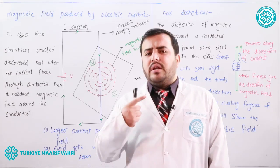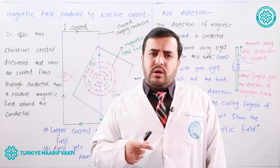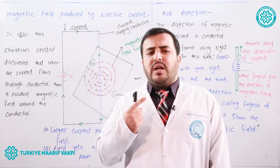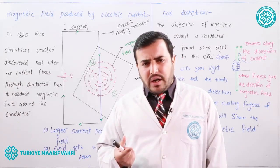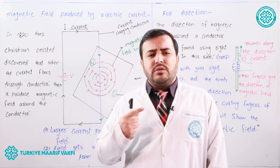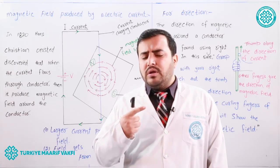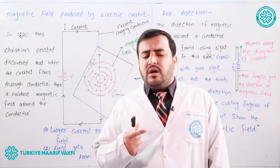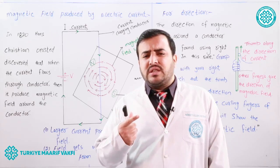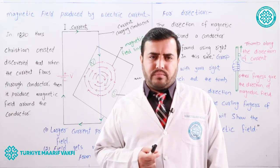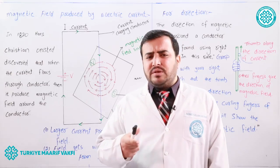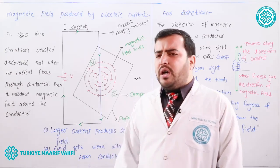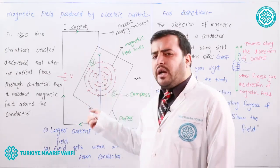When the current flowed, he observed that the needle of the compass showed deflection. So he discovered that when current is flowing through a conducting wire, it produces a magnetic field around the wire. This discovery was the foundation for the branch of physics called electromagnetism.